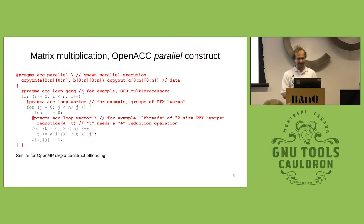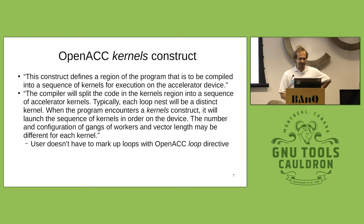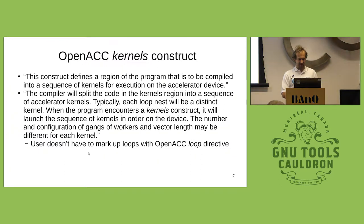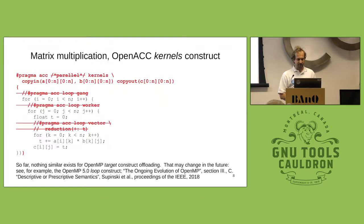The standards committee for OpenACC wanted to make things simpler for the user and introduced the kernels construct, which defines a region of the program to be compiled for execution on an accelerator device into a sequence of kernels. Each loop nest will be a distinct kernel. The user doesn't have to mark up loops with the OpenACC loop directive, so you can greatly simplify the usage of OpenACC — you just say `pragma acc kernels` instead of `parallel`, and you don't have to specify the `acc loop` directives.